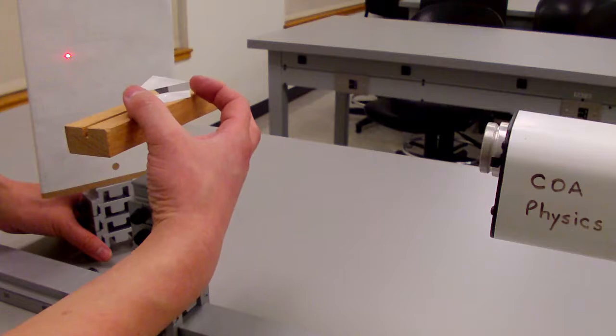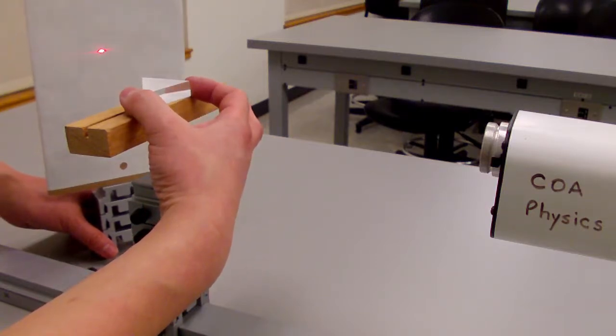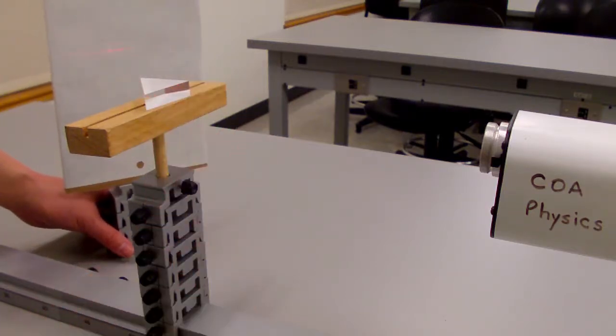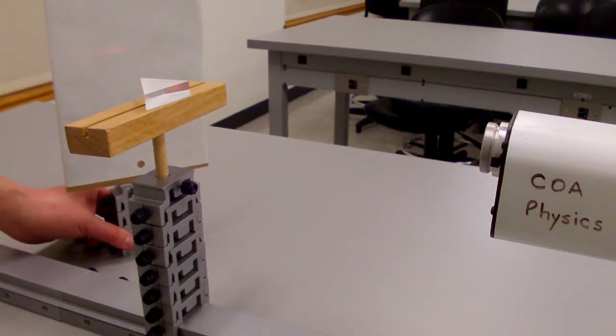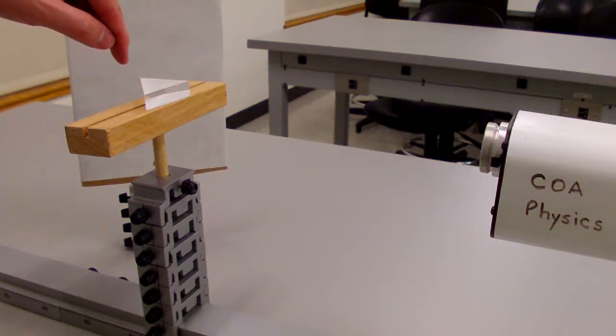The reflected light eventually disappears. At this angle is where we get total internal reflection on this surface.